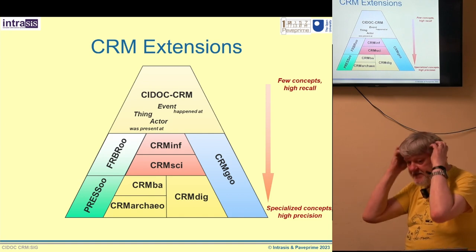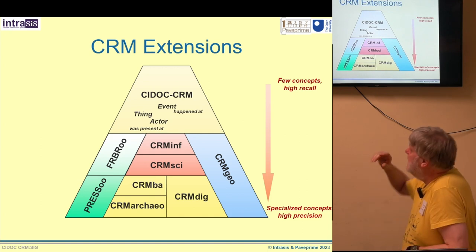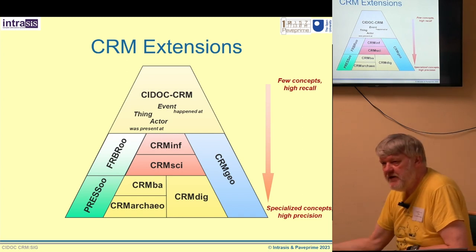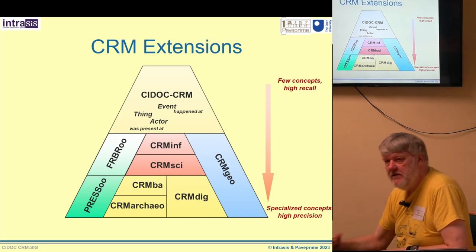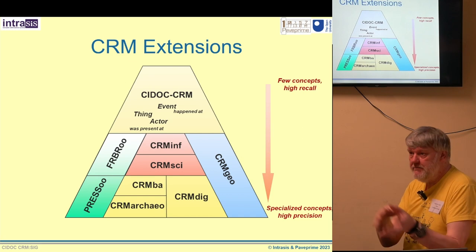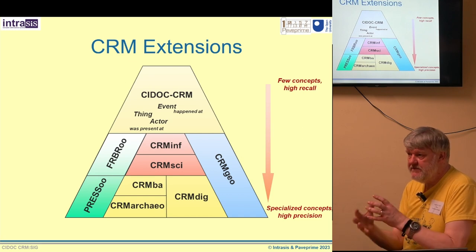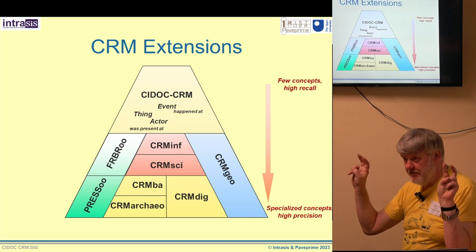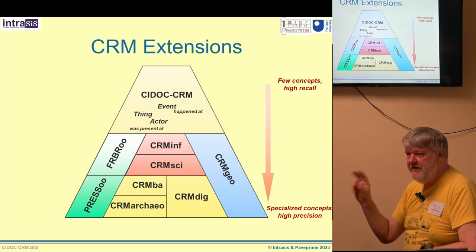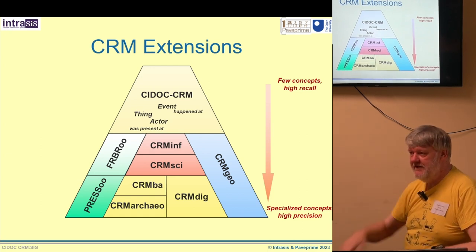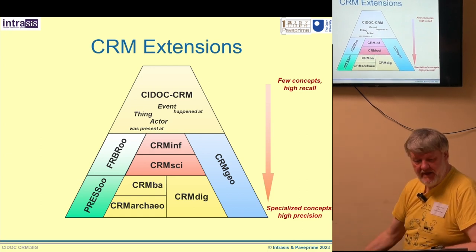The bits we'll be concerned about are CRM INF, which is the argumentation module, which allows us to say we believe this or we don't believe it — which is unusual in most cultural heritage recording. Everything is treated as the truth. And now we can say, 'actually, this is complete nonsense,' and talk about that.